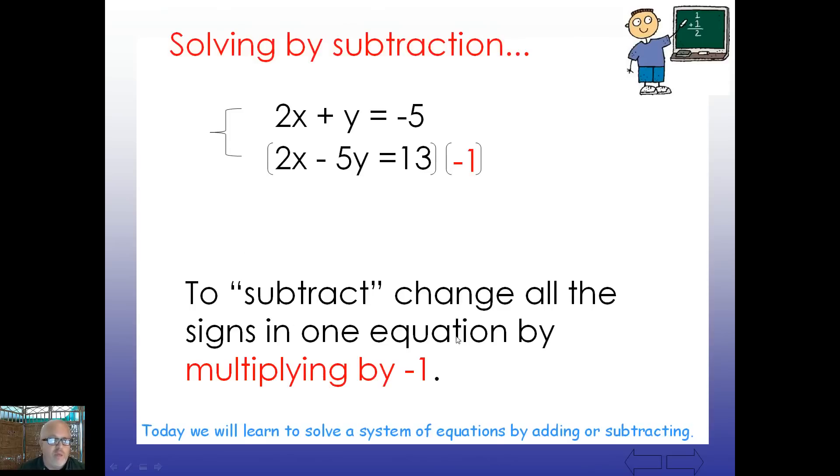Remember, we learned this previously. What we can do here is if we have to subtract, notice that 2 subtract 2 would be 0. Now, what I'd like to do is, to be honest with you, is I'd prefer not to technically subtract in algebra. So what I'm going to do here is manipulate the bottom equation by multiplying by negative 1. And what does that do? Well, that gives us now negative 2X, positive 5Y, negative 13. And then I can go back to addition.